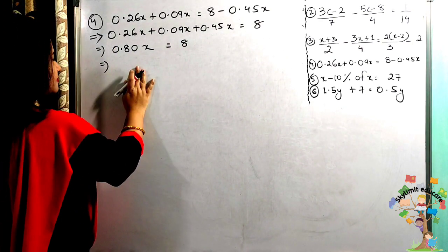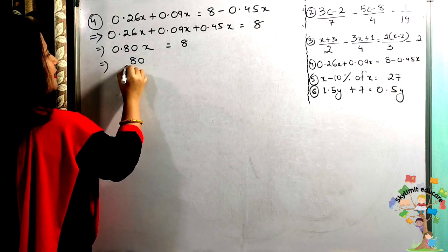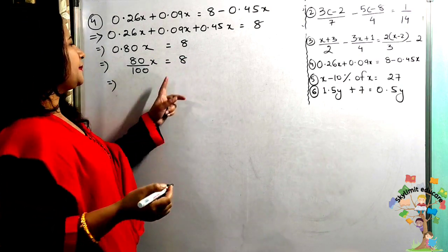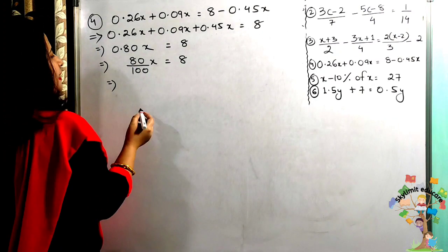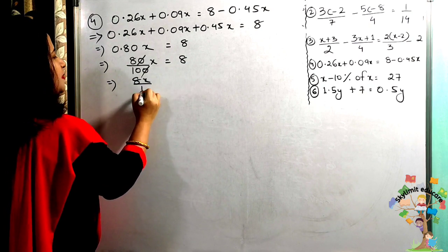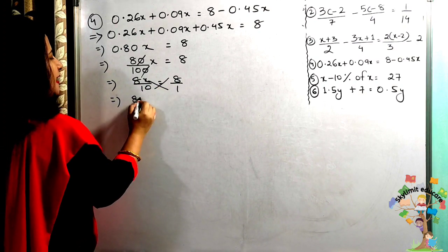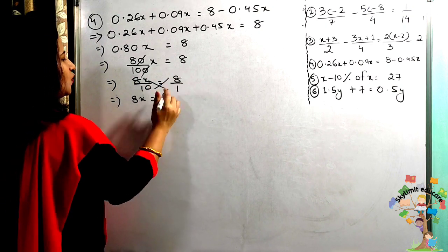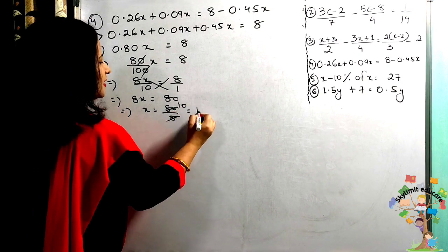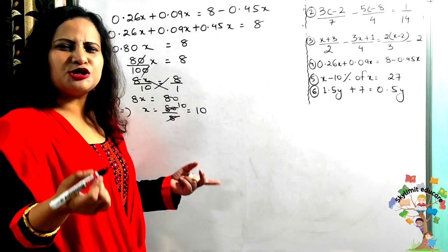Now x = 8 ÷ 0.80. Writing 0.80 as 80/100, simplify to 8/10. So 8x/10 = 8/1. Cross multiplying: 8x = 80, so x = 10.